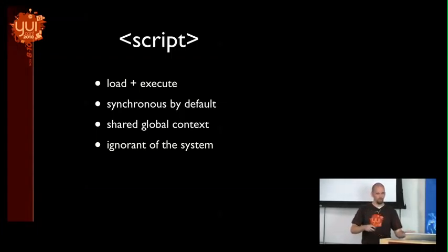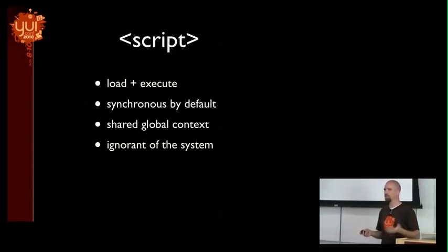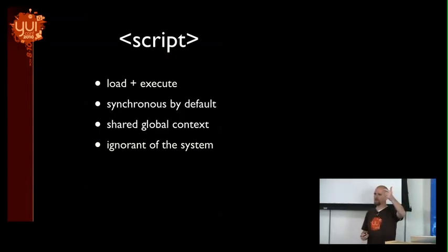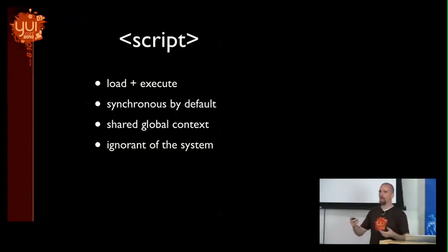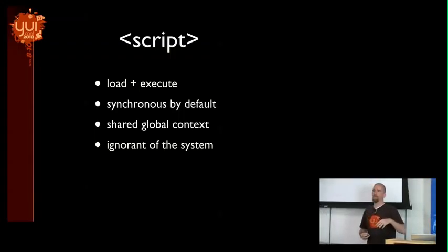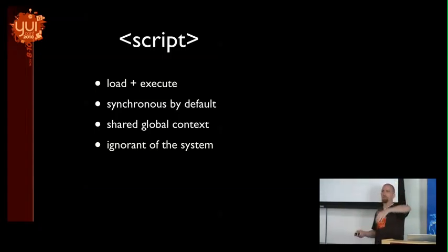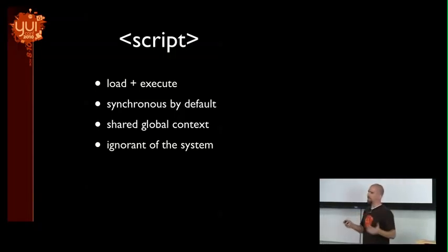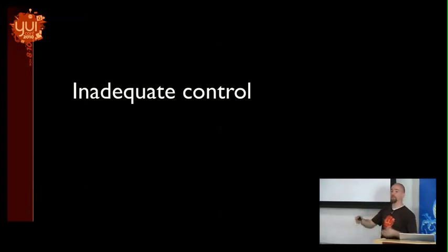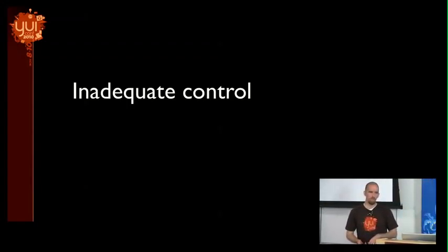The shared global context means that content inside a script has access to everything on the page — there is no security built in whatsoever. And the script is ignorant of the system it's in. If you're building an application made of different components, one script has no knowledge of its relationship to another script. There's no mechanism for describing that in the script tag itself. The bottom line is it's an inadequate control for developing complex applications — we need more granular control of when things are loaded, executed, and where things run.